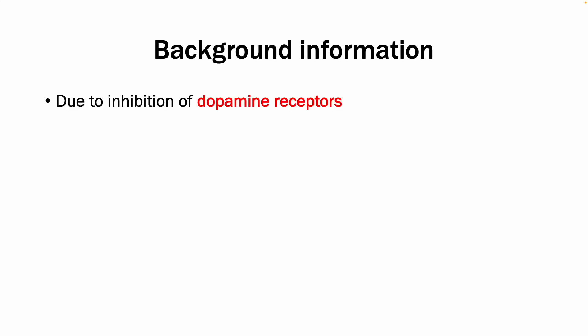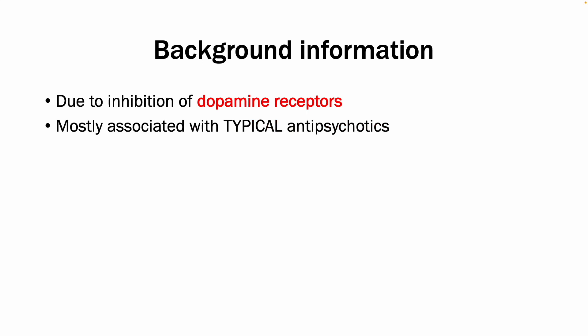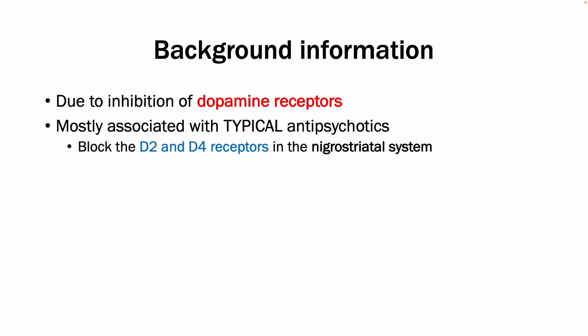In this video I'll give you a brief overview of extrapyramidal symptoms. Extrapyramidal symptoms are caused by inhibition of dopamine receptors, mostly associated with typical antipsychotics such as haloperidol, chlorpromazine, or prochlorperazine. This is due to those antipsychotics blocking the D2 and D4 receptors in the nigrostriatal system.